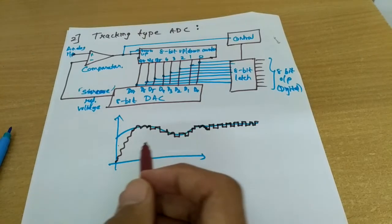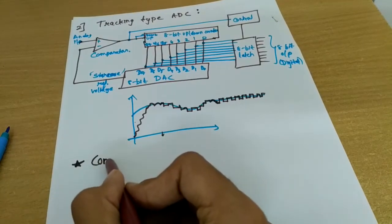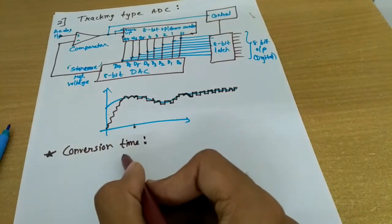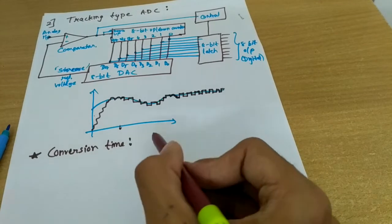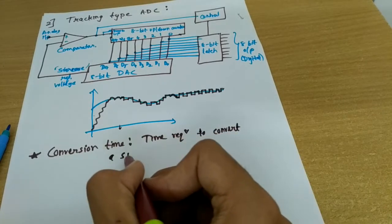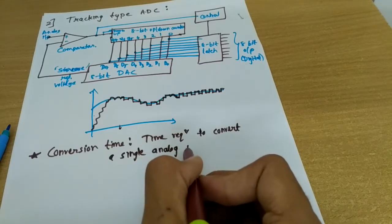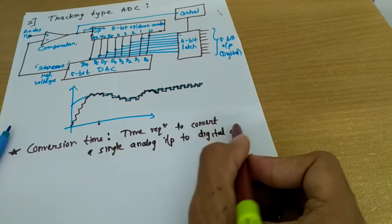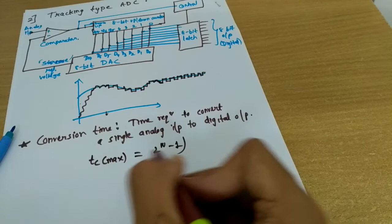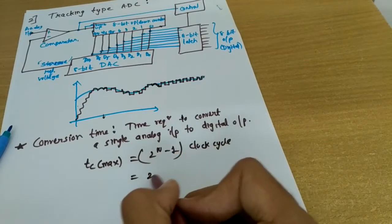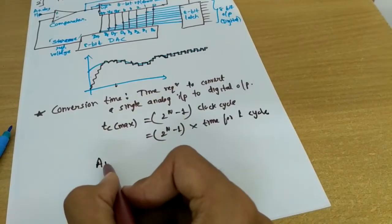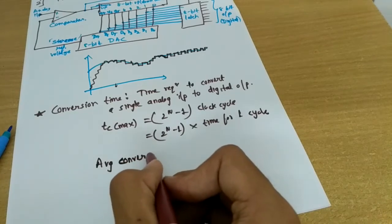Now let's discuss the conversion time — that is, the time required to convert an analog input to digital output. The maximum conversion time, Tc max, is 2 raised to n minus 1 clock cycles, which equals 2 raised to n minus 1 multiplied by the time for one clock cycle.